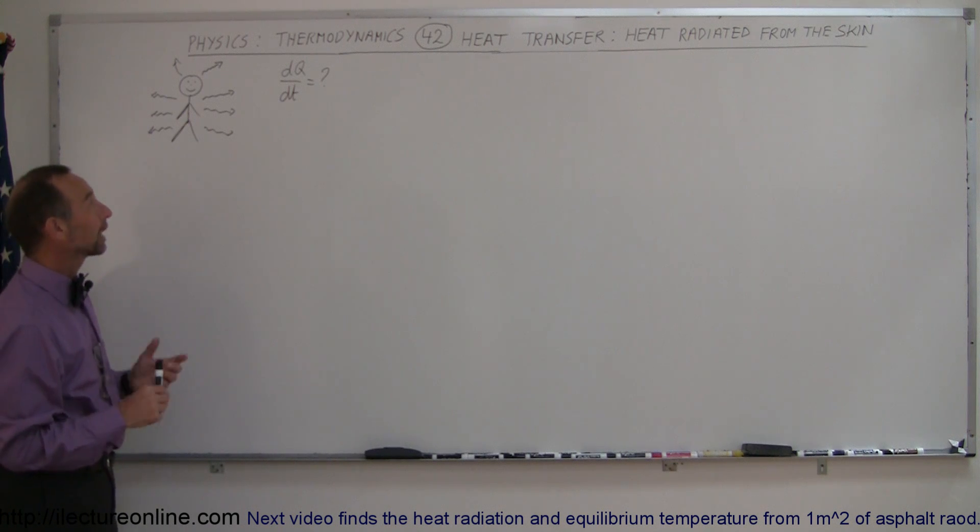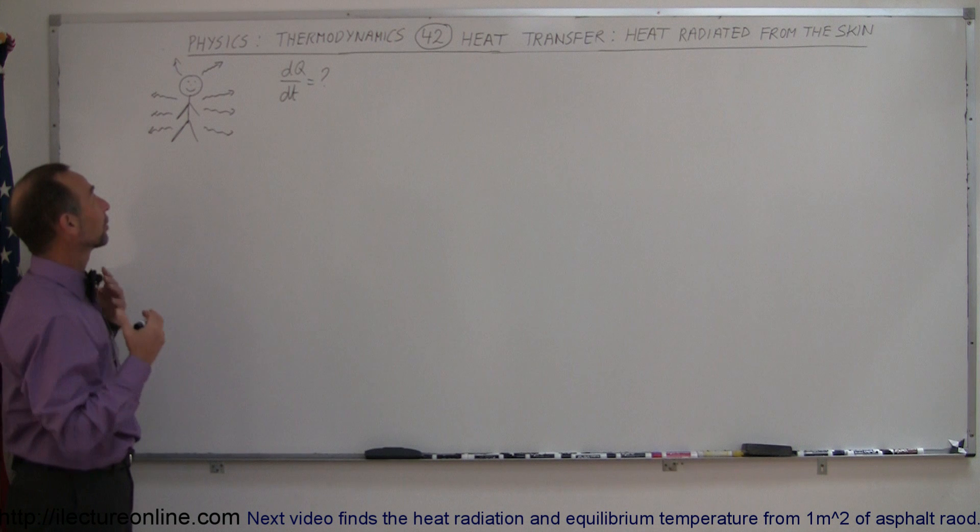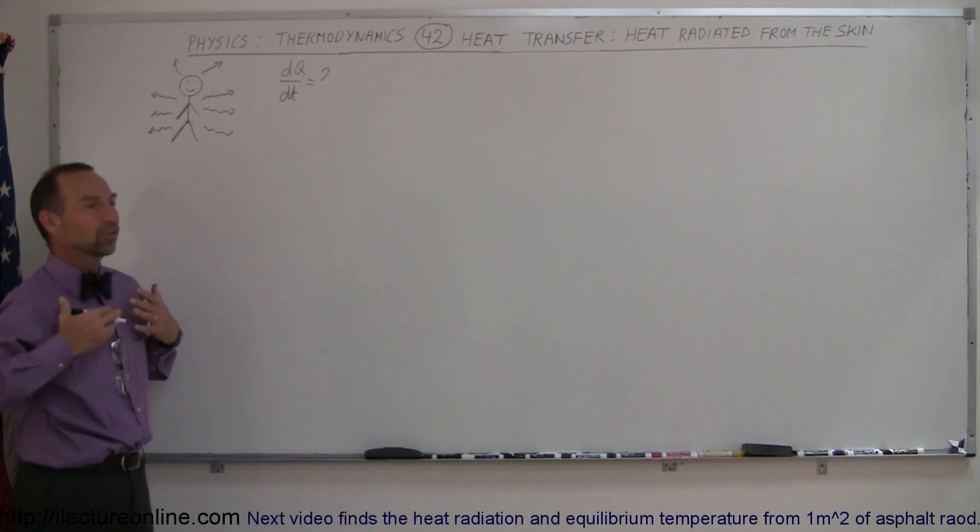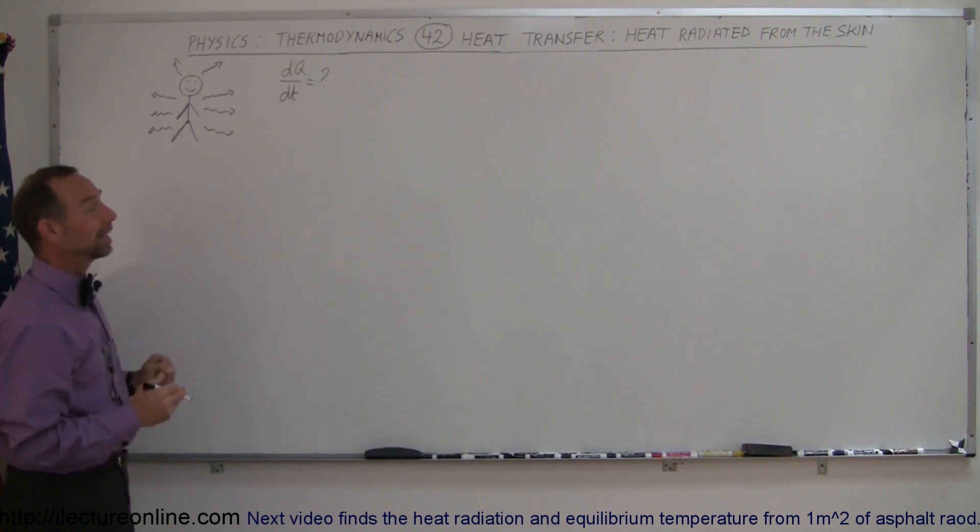In our next example, we're going to calculate how much heat is being radiated from the human body. Let's say that a person doesn't have any clothes on, so the skin is open to the atmosphere, and radiation heat is being lost from the skin. How much heat does a person typically lose?